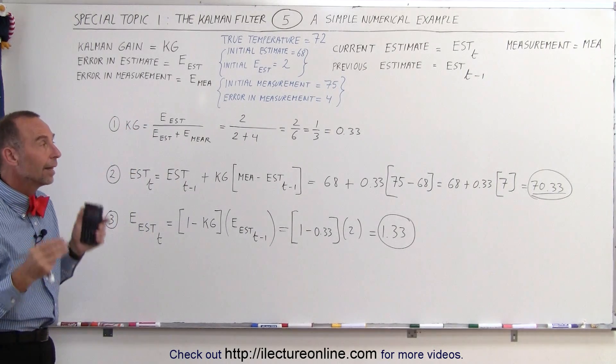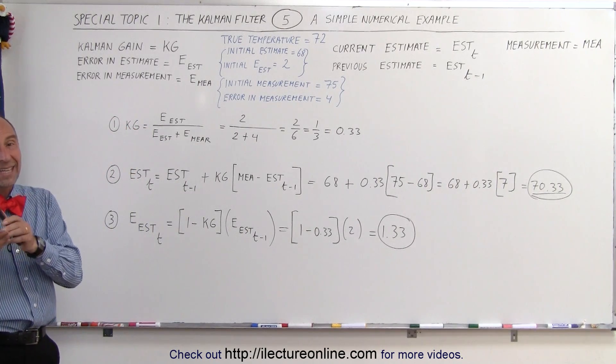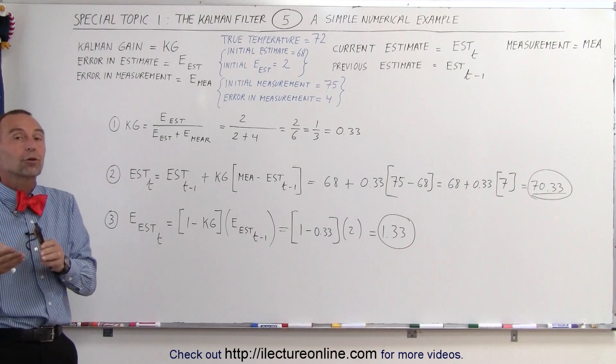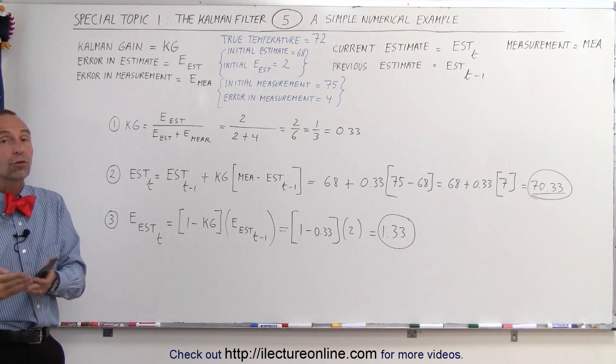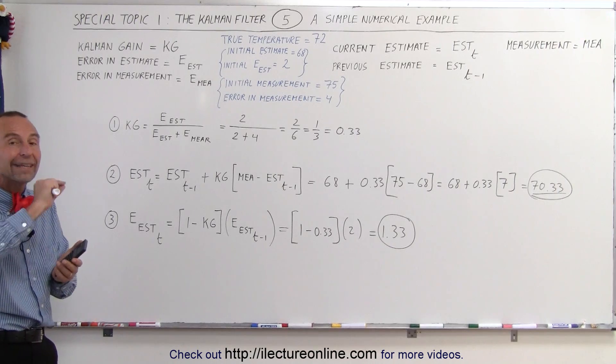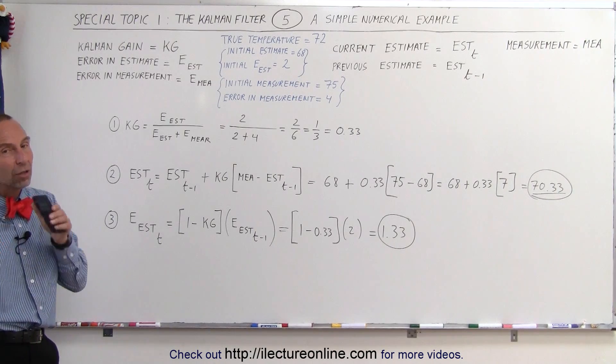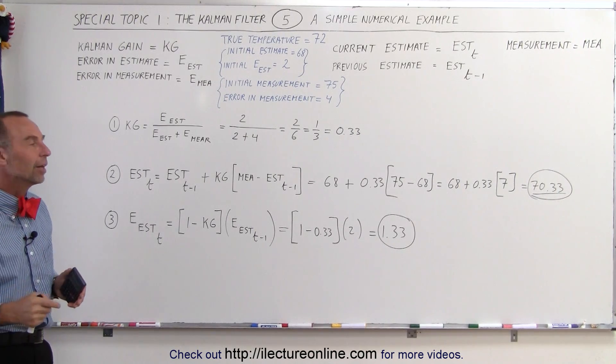And we just keep doing that over and over again until we feel that the estimate gets to be very close to the true value. How do we know that the estimate gets to be very close to the true value? When the variations in the estimate become very small we must be zeroing in on the true value, and that's how we know.